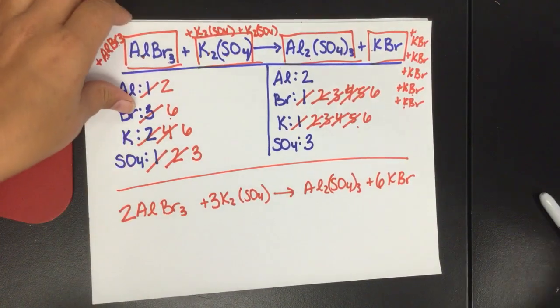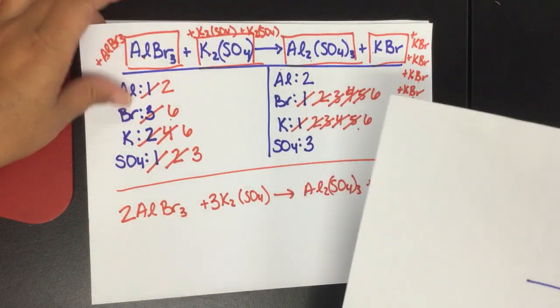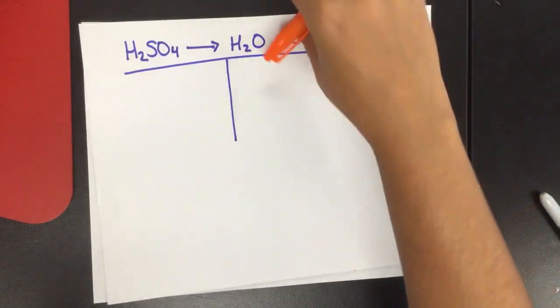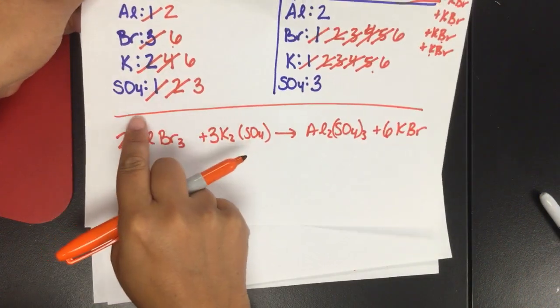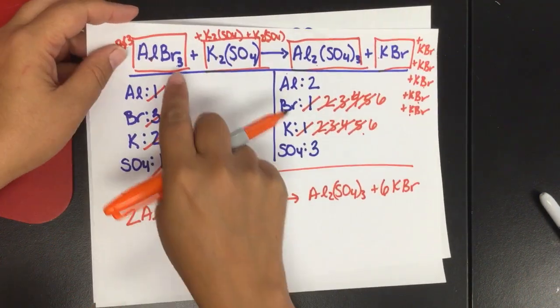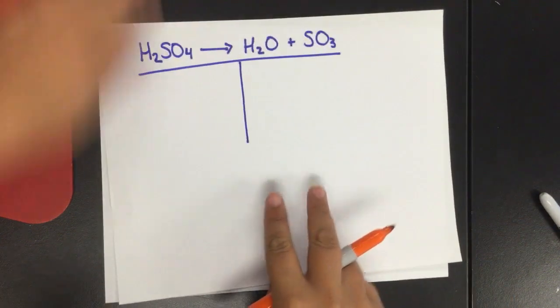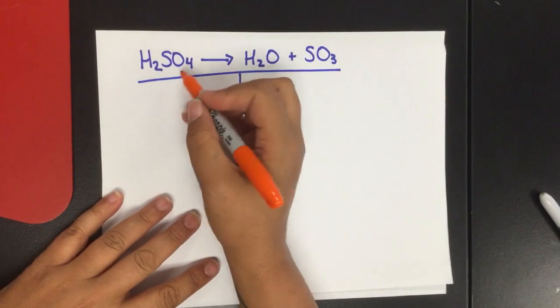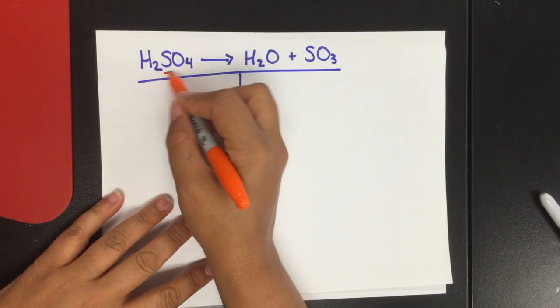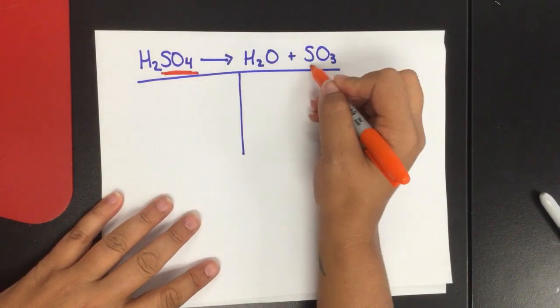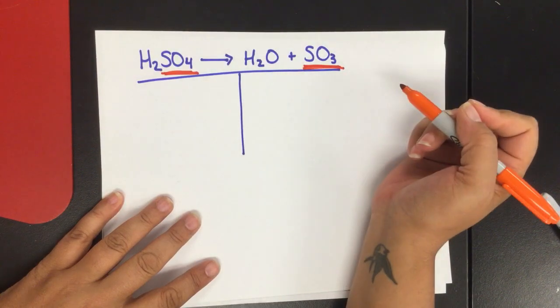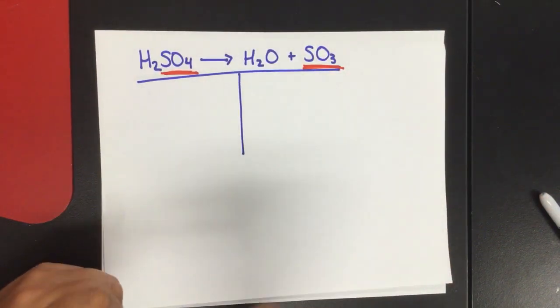The one thing I will say is if you do put your polyatomics together and keep them as one big compound, you have to make sure that they are exactly the same on both sides. So this, for example, would not work. I could not do SO4 here because this is SO4 and that is SO3. So I cannot use that trick.